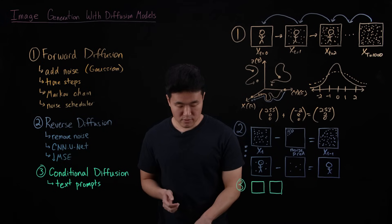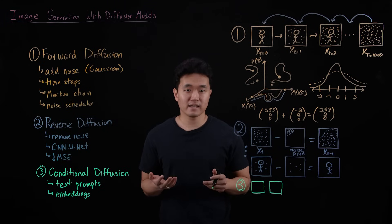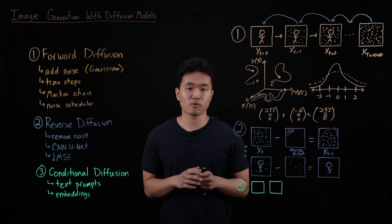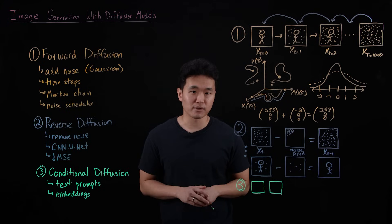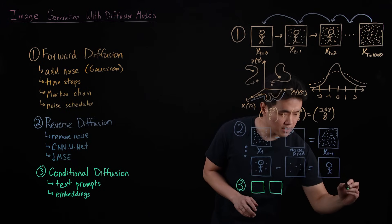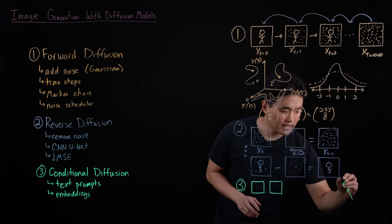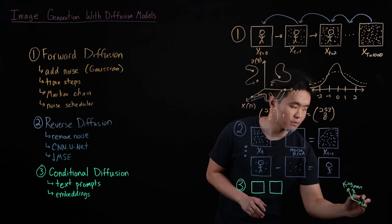So the first step is we have to represent our text within embedding. Think of an embedding as a numeric representation or a numeric vector that's able to capture the semantic meaning of natural language input. So as an example, an embedding model is able to understand that the word king is more closely related to the word man than it is to the word woman.